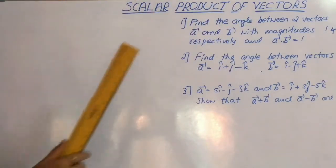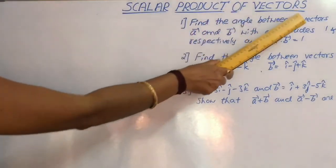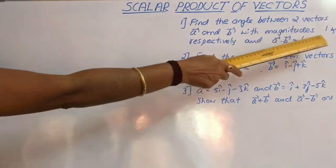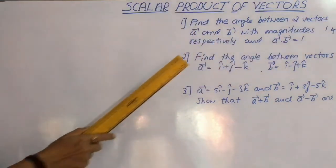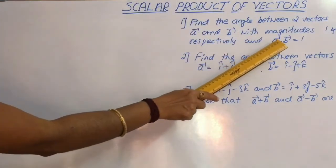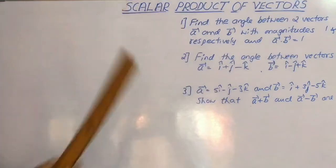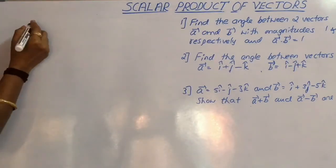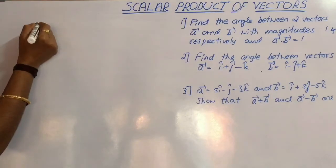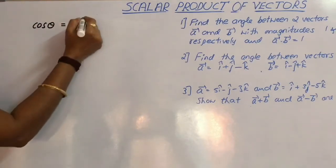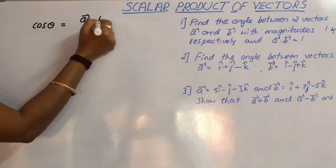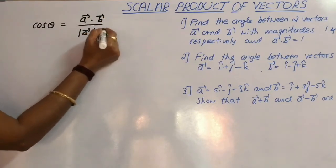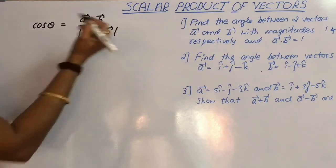Consider the first question: Find the angle between two vectors vector A and vector B with magnitudes 1 and 2, and vector A dot B equal to 1. We know that cos theta equals A dot B divided by mod of vector A into mod of vector B.